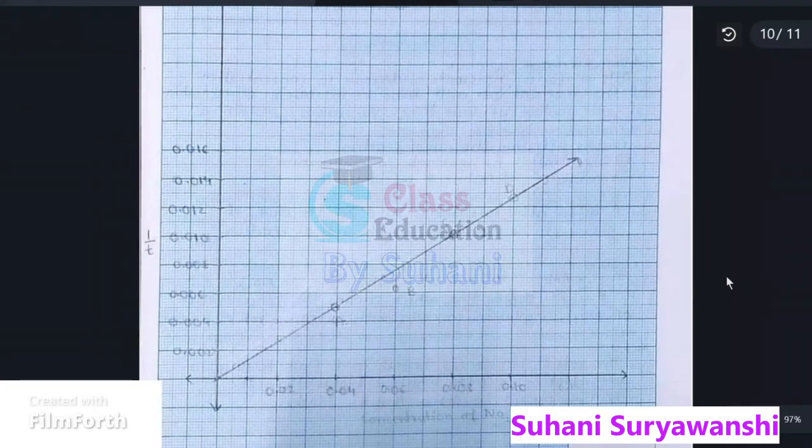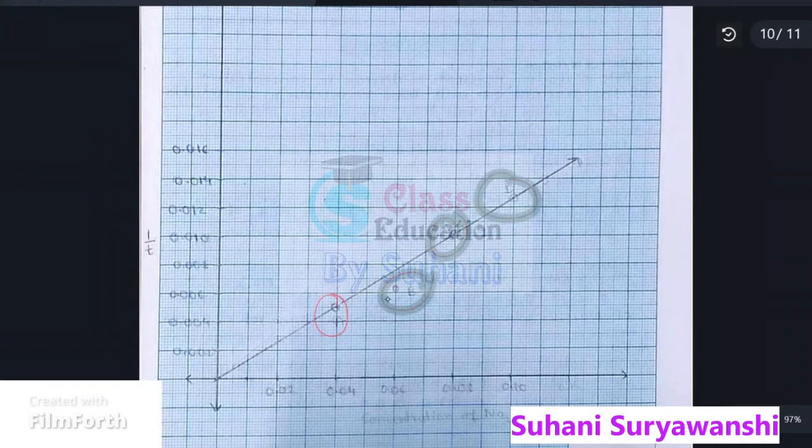Here is your graph. This is the first value, second value, third value, and fourth value. I hope it is quite visible. Here I have written concentration of Na2S2O3 or sodium thiosulphate.